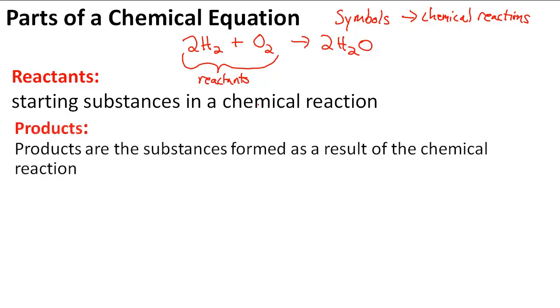Then we have the products. We have this arrow here indicating yields. So when these two interact and react with each other, that's why they're called reactants, they form products. The products are the substances formed as a result of the chemical reaction.